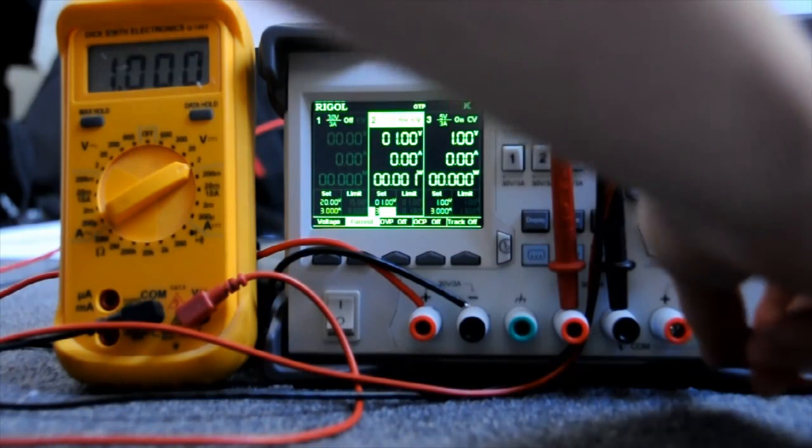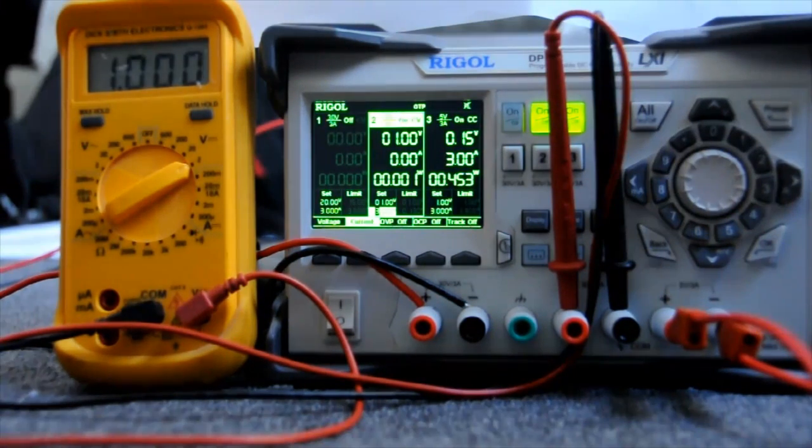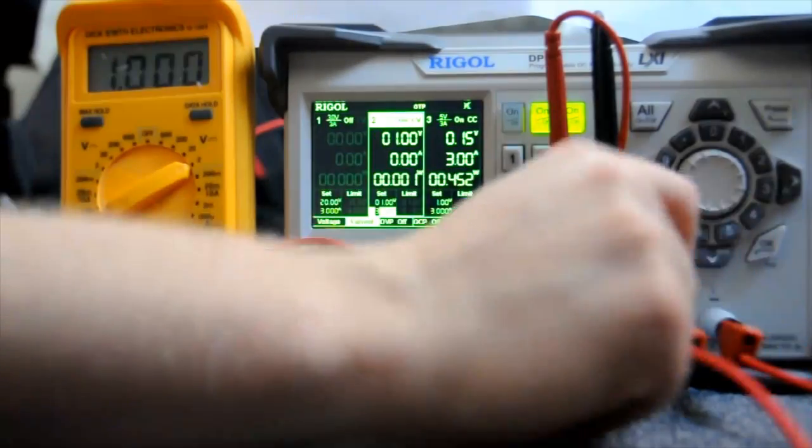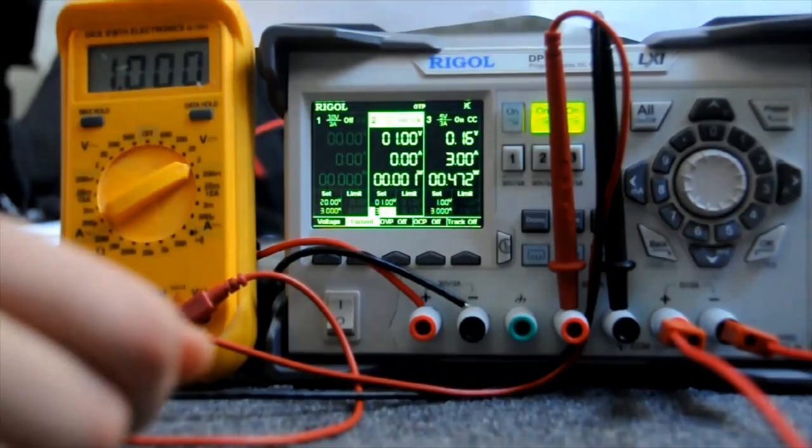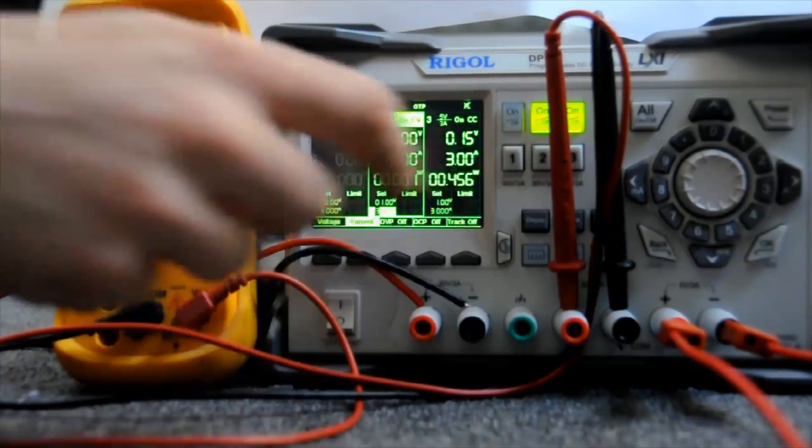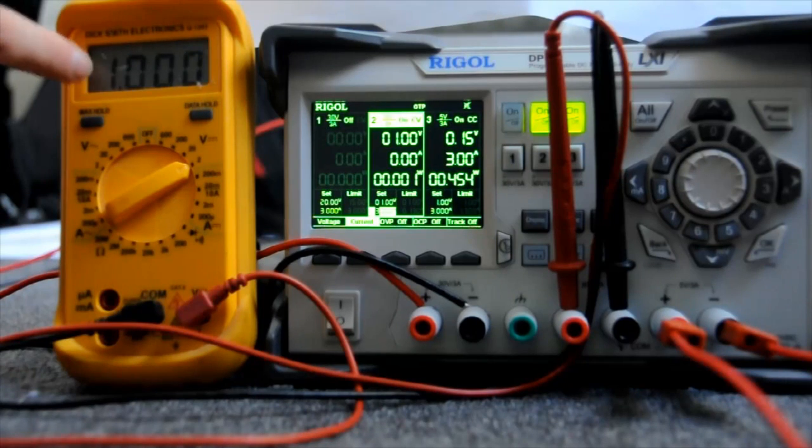So what if I short out channel 3? By the way, I'm measuring channel 2. Now I've shorted out channel 3 and the fan makes big noise. We're getting 3 amps out, but channel 2 is still reporting 1 volt. It's still regulated and producing 1 volt output.